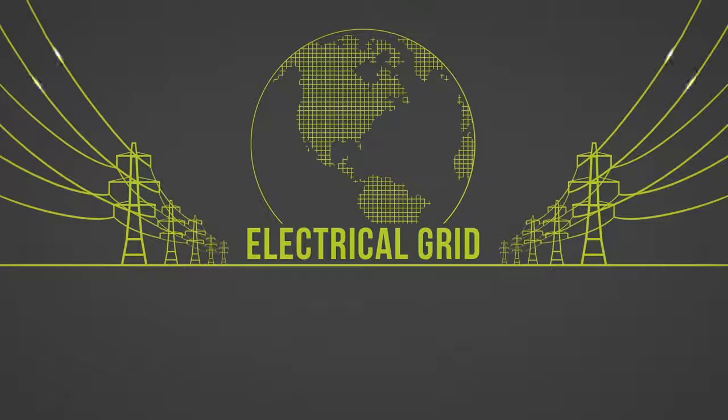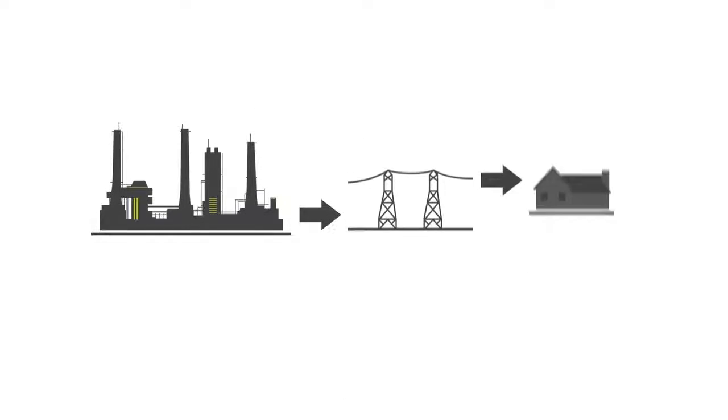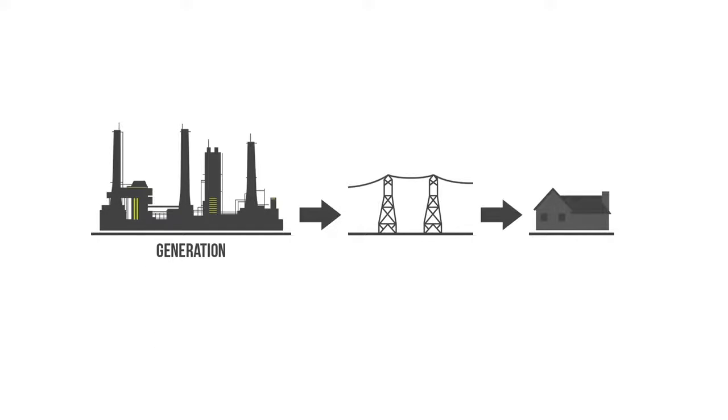The electrical grid. The electric grid is the network through which power is generated, transmitted, and distributed to consumers. The electric grid is broadly made up of three main components: generation, transmission or distribution, and consumption.